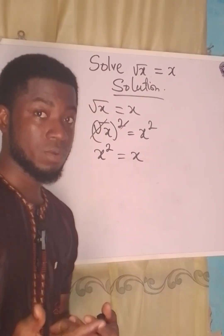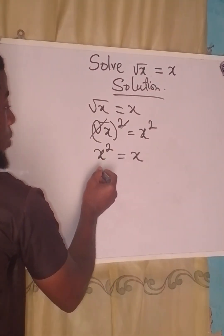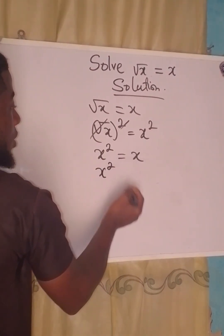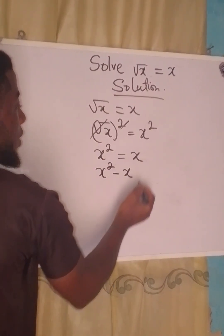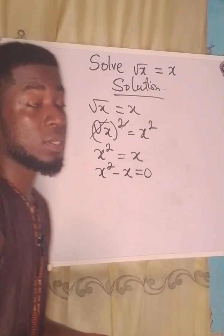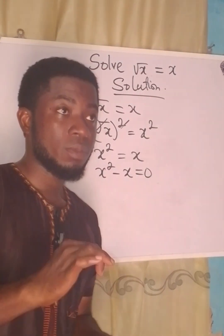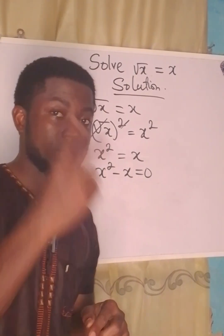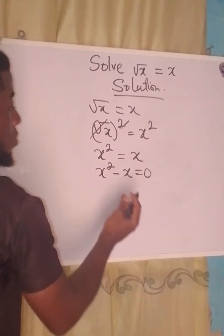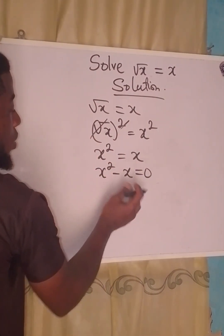Now I'm going to have x squared minus x equals zero. By the way, this is a quadratic equation because of the highest power of two. So what is common to this two is x.